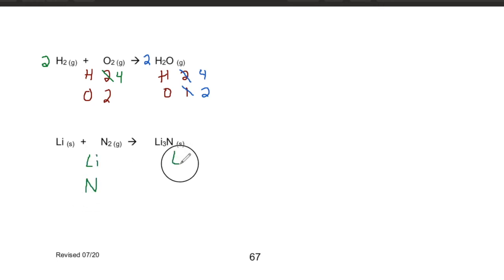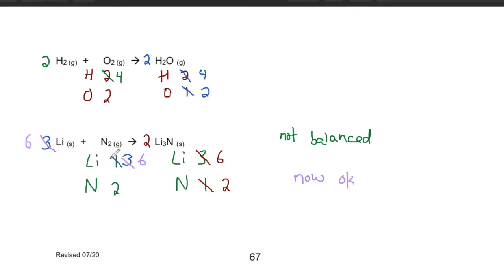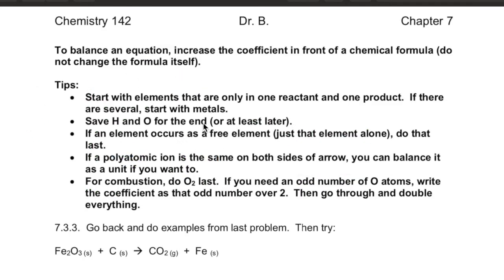Here we have another reaction with just two elements, and again it's not balanced at first. We're going to have to increase the product. You might first notice lithium — you need three of that. However, nitrogen still needs to be increased. We increase lithium nitride and have two of those, which changes both nitrogen and lithium. So now instead of three lithium, we need six. With six lithium and one nitrogen molecule making two lithium nitride, it's balanced. That's the basic back-and-forth: try something, check it — that's how you balance an equation.